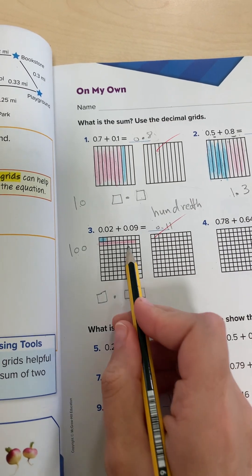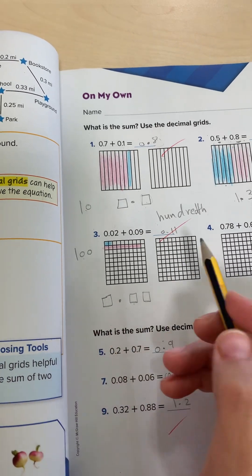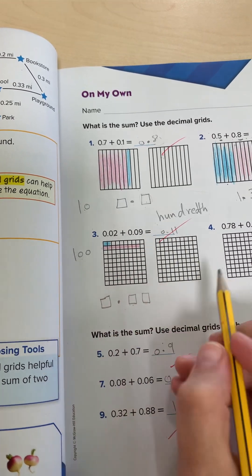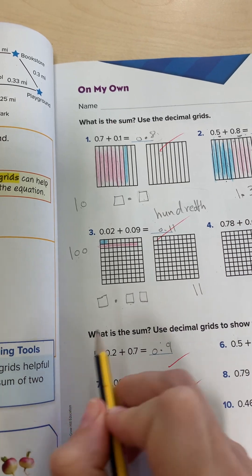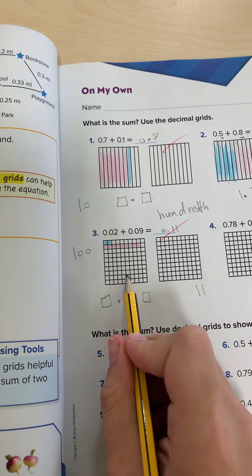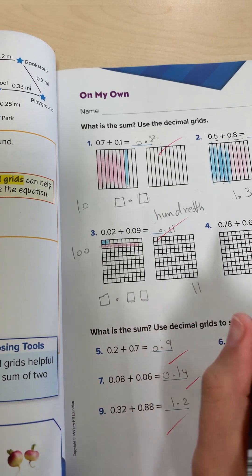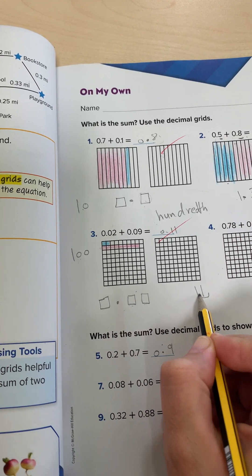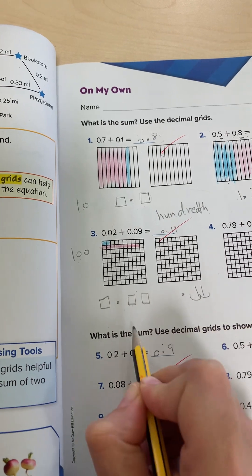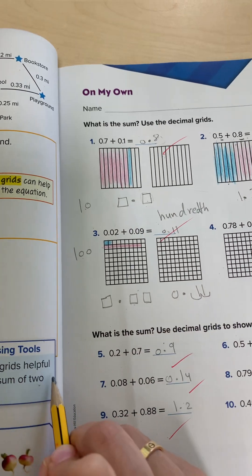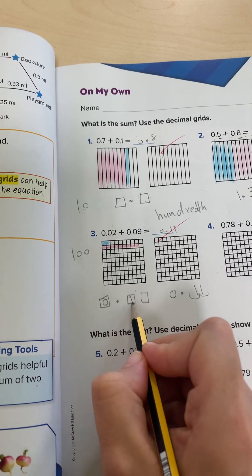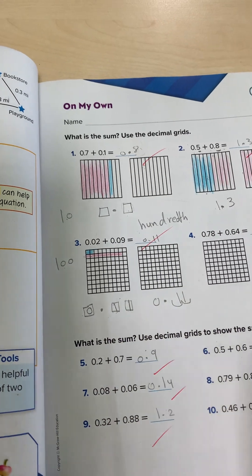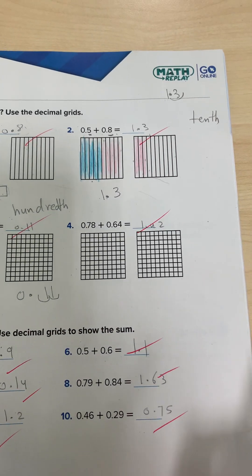We have 11 squares. How do we place the decimal point? This is hundredths, so you are allowed to have two digits after the decimal. Count from the right: one, two — put the decimal point there, then a zero in front. So the answer is 0.11.